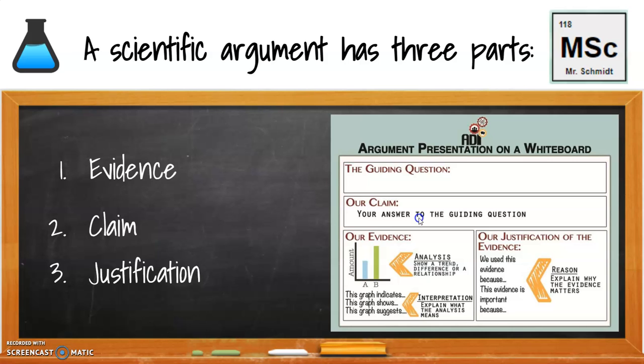The answer to that guiding question is our claim, and then our evidence shows an analysis. So we look at graphs, we look at data, it shows a trend or a difference or a relationship, and that's what helps us show our evidence here. This graph indicates, this graph shows, this graph suggests, those types of things are statements we would make in our evidence column.